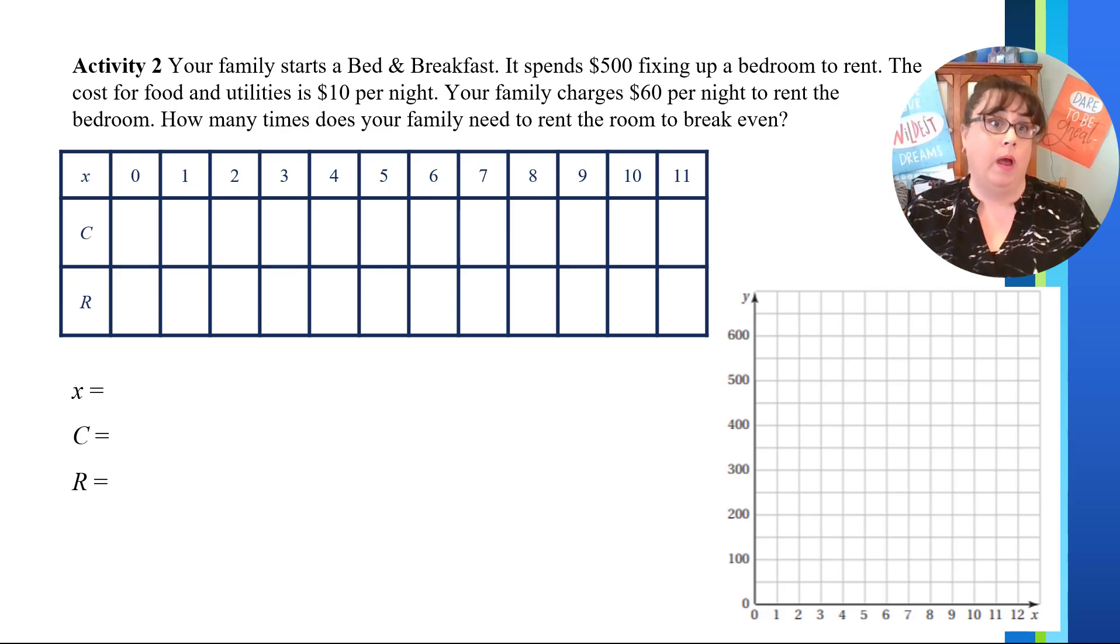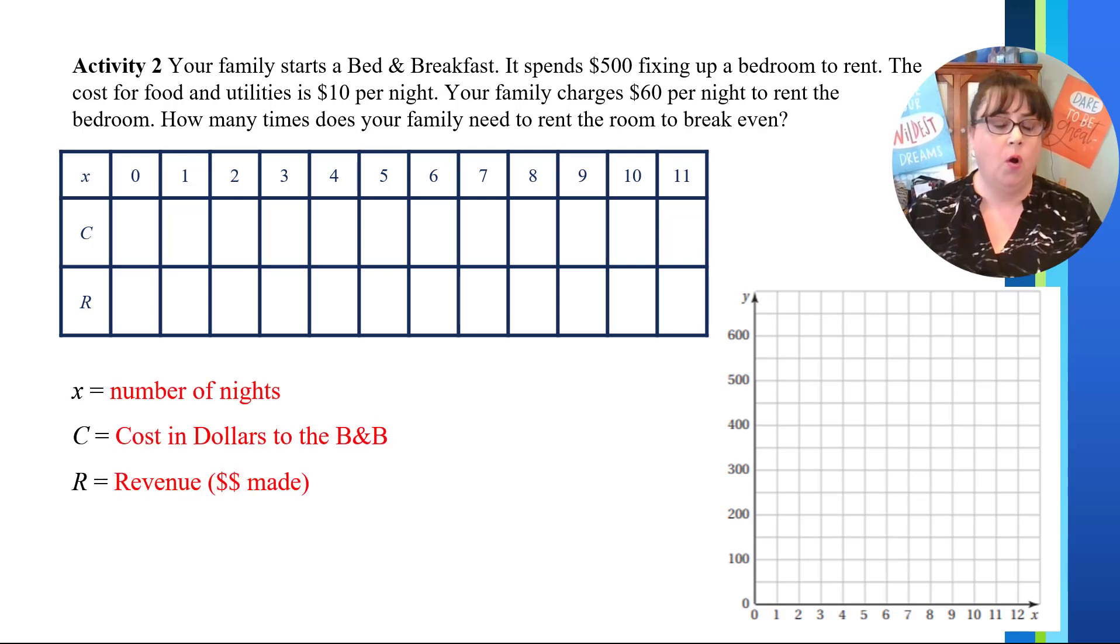So here we have an example of why we would want to use this. Let's say that we have a bed and breakfast and we have to spend some money before we actually open it up and we spend $500. The cost of food and utilities is $10 per night and the family is charging only $60 to rent the room. And we need to know how many times do we have to rent the room before we even break even. And so when we look at this, we first need to know what is each thing worth. And so X is the number of nights and C is our cost in dollars for the bed and breakfast. So that's how much it's going to cost us. So that's money out. And R is the revenue or the money that we make.